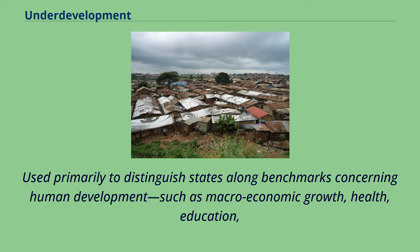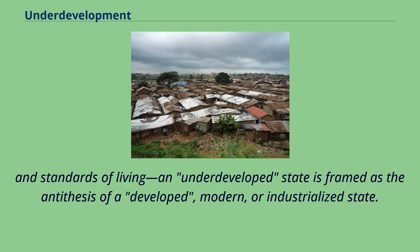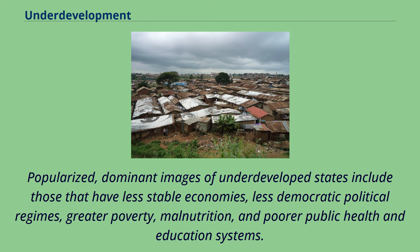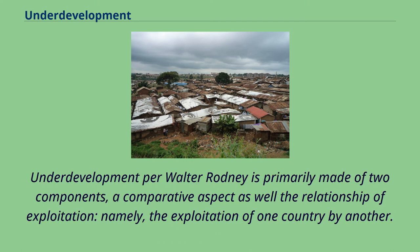Such benchmarks include macroeconomic growth, health, education, and standards of living. An underdeveloped state is framed as the antithesis of a developed, modern, or industrialized state. Popularized dominant images of underdeveloped states include those that have less stable economies, less democratic political regimes, greater poverty, malnutrition, and poorer public health and education systems.